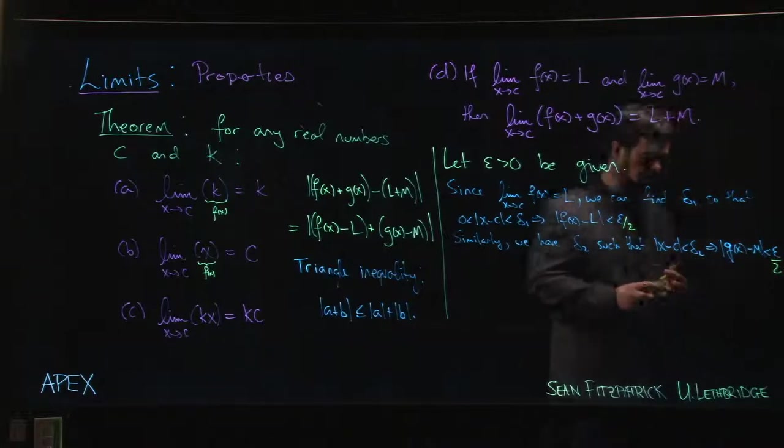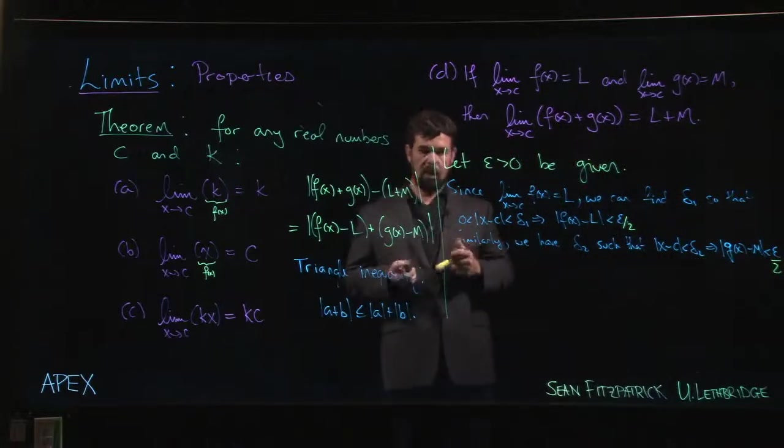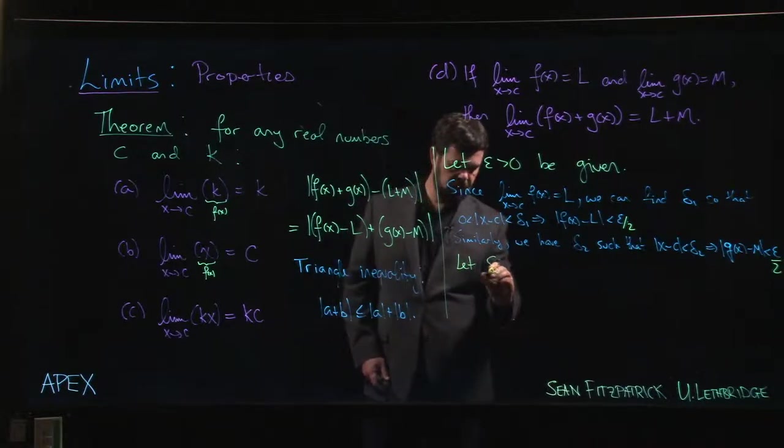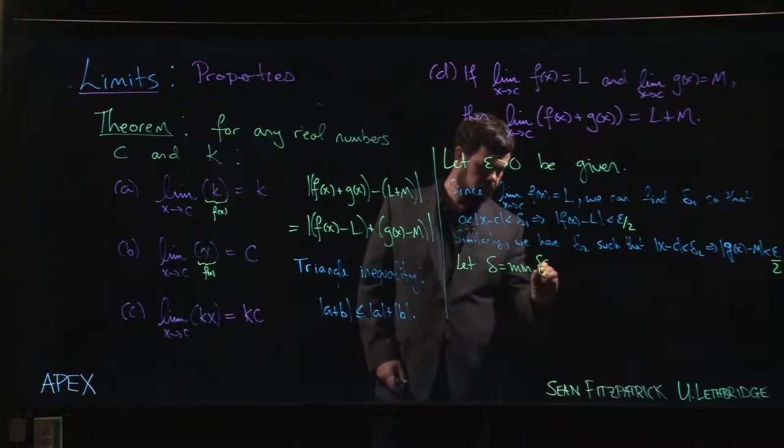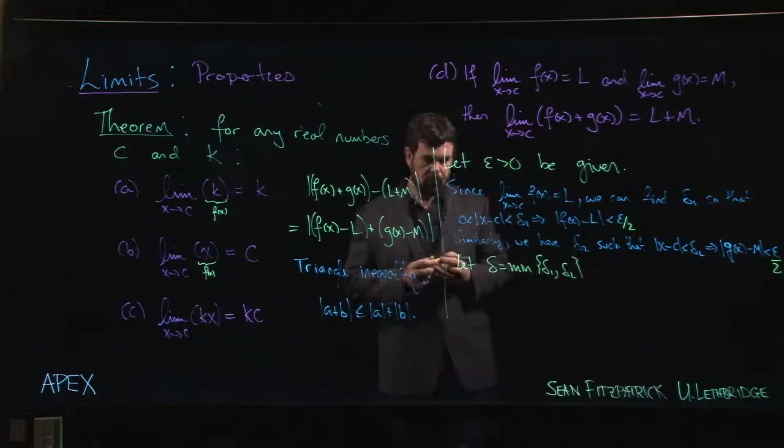All right, so how do we proceed? We let delta be the minimum of delta_1 and delta_2.